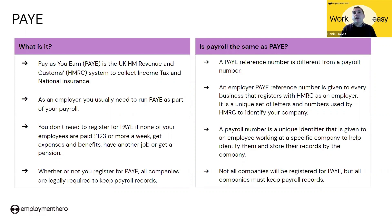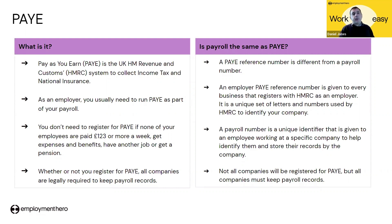A PAYE reference number is different from a payroll number. An employer's PAYE reference number is given to every business when they register with HMRC — it's a unique set of letters and numbers and needs to be displayed on things like payslips and tax forms. The payroll number is a unique number given to the employee working at a specific company and helps identify them and store their records. Often payroll systems will automatically allocate this number for you. Even if you don't need to register with HMRC for PAYE, you still need to keep accurate records.